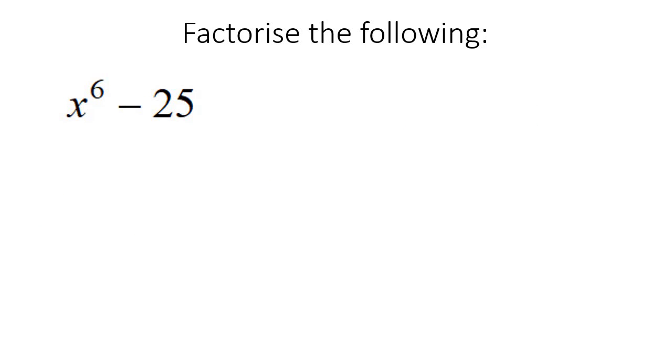Here's our next one. This one is straight, we can go straight into it, because there's no common factor here. So what is the square root of that? That would be x³ and x³. And then the square root of this would be 5 times 5. And then put the plus in the one and a negative in the other.